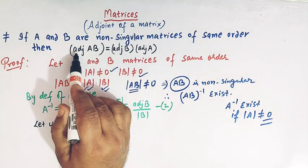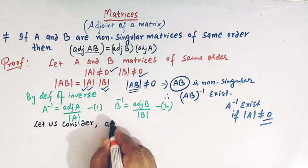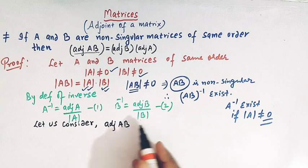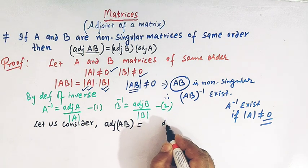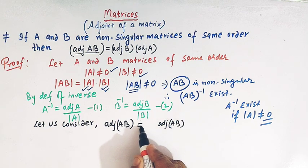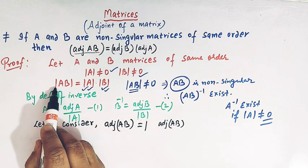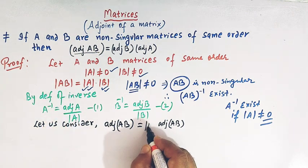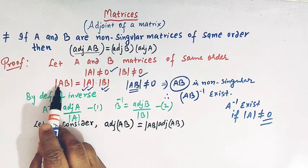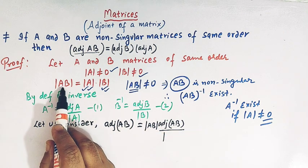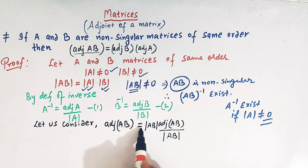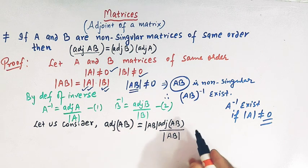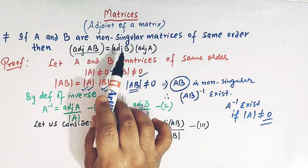Now let us consider the quantity adj(AB). We can write adj(AB) multiplied by det(AB) and then divide by the same quantity det(AB). These two quantities cancel, and we again get adj(AB) equals adj(AB). So we use this equation to arrive at the result.